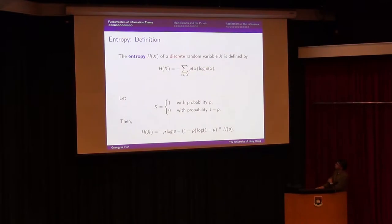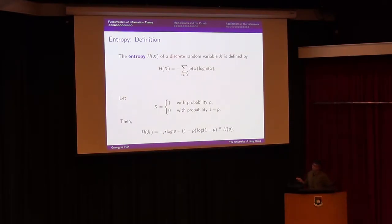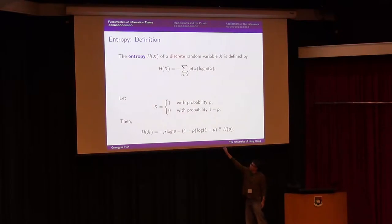A quick example: let x be a Bernoulli random variable with probability p — so it's one with probability p and zero with probability one minus p. The entropy of this discrete random variable x can be computed as a simple function, denoted H(p).